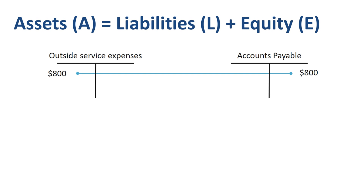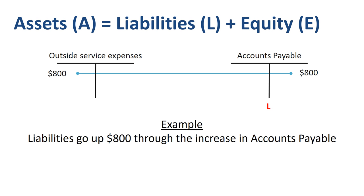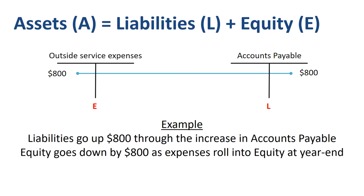What about the other example of outside service expenses? It is very clear that recording the invoice increases accounts payable, which is a liability. But what about the outside service expenses, which is a debit in the income statement? Remember that at year end, a profit gets added to equity and a loss gets subtracted from equity. So this journal entry also complies with the accounting equation, as liabilities go up and equity goes down.